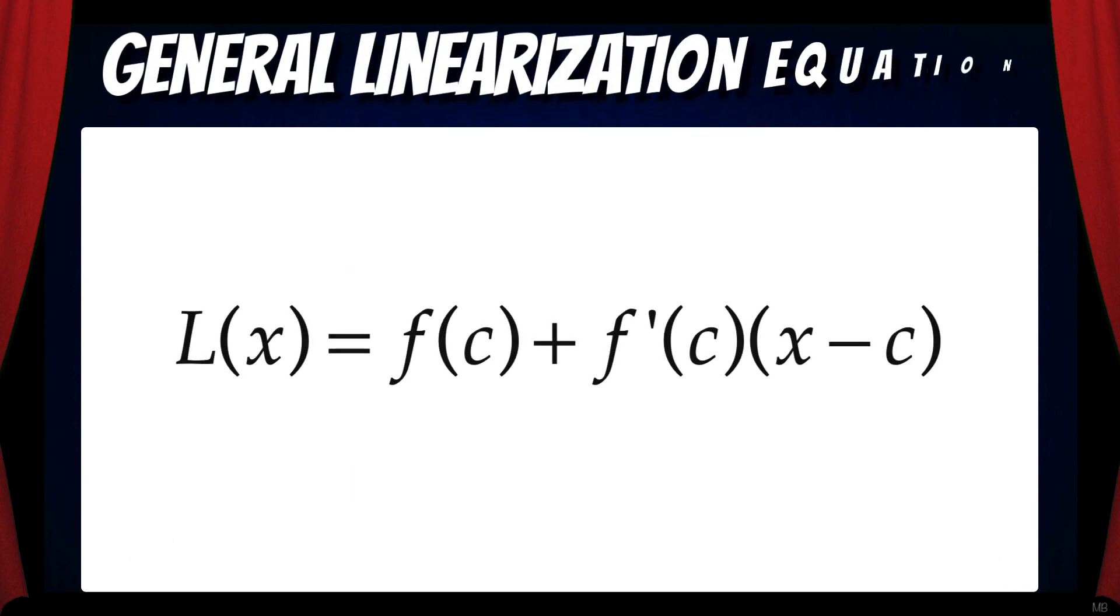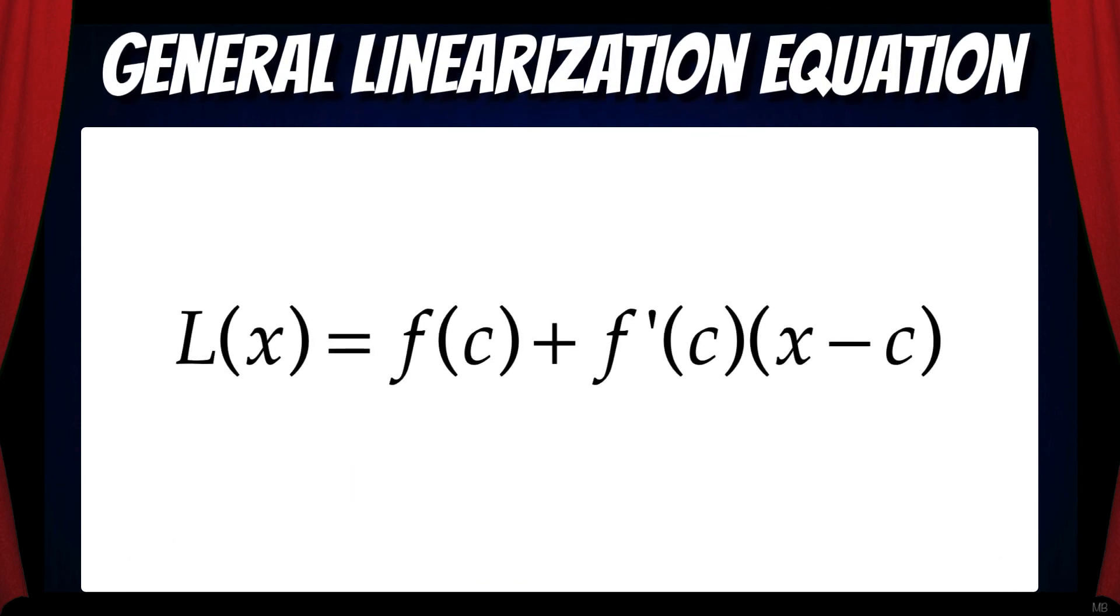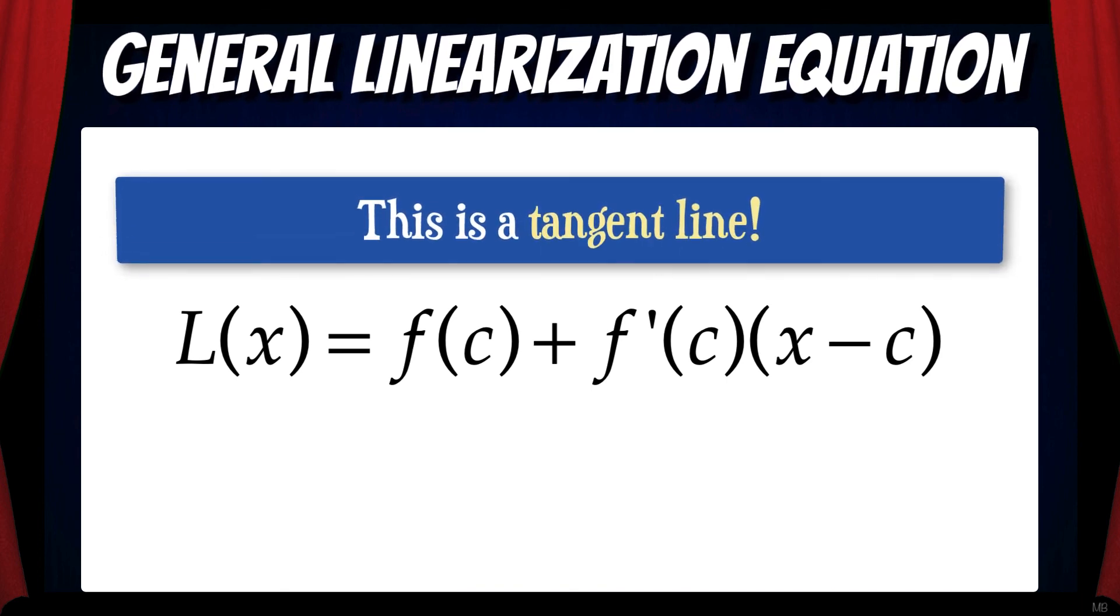The general linearization equation is L of x equals f of c plus f prime of c times x minus c. Remember, we can get this from rearranging point-slope form and making some variable substitutions. And always remember that this linearization equation is just another way of expressing a tangent line.